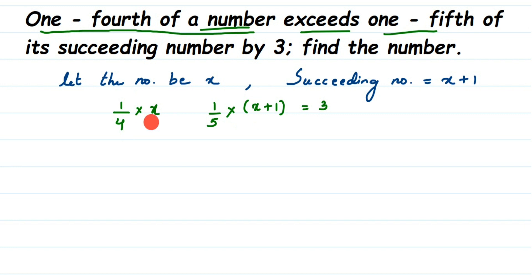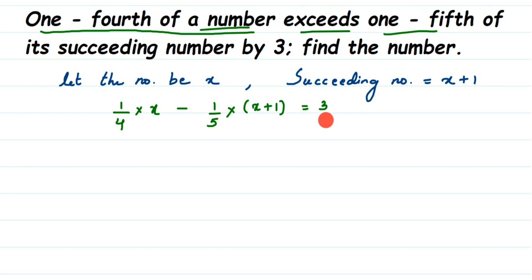The first number exceeds the second number by 3, which means we subtract them. For example, 8 exceeds 5 by 3 means 8 is more than 5 by 3 numbers - if you subtract 8 and 5 you get 3. Same way here, 1/4 of the number exceeds 1/5 of the succeeding number by 3, so it equals 3. We subtract the two to get our equation.